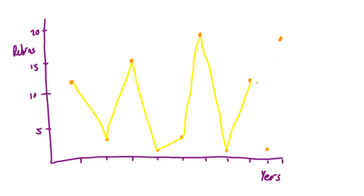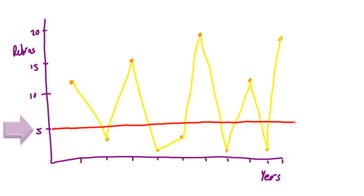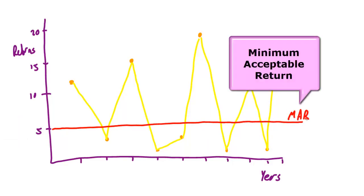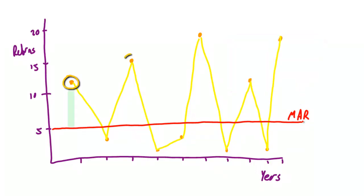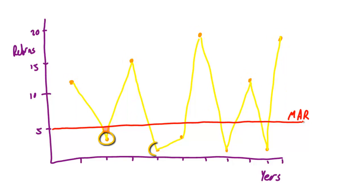So what does any of this mean? Well, if we take a look at the annual returns on this 10-year chart, let's say we put in a line where an investor's happy with an annual return of anything over 5%. We call this line the minimum acceptable return, or MAR for short. You can see the points above the line are quite erratic, and the points below the line are much less erratic.